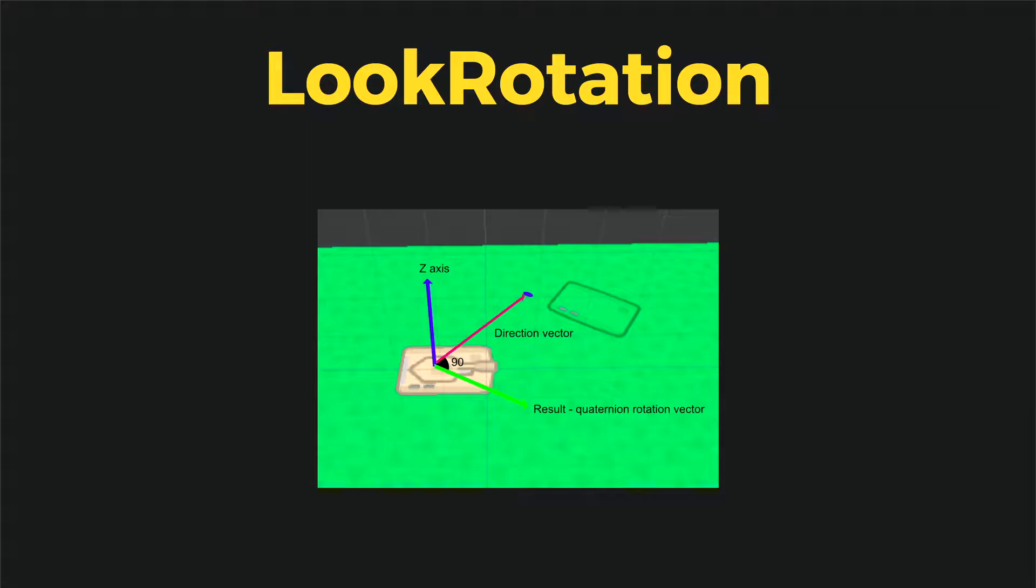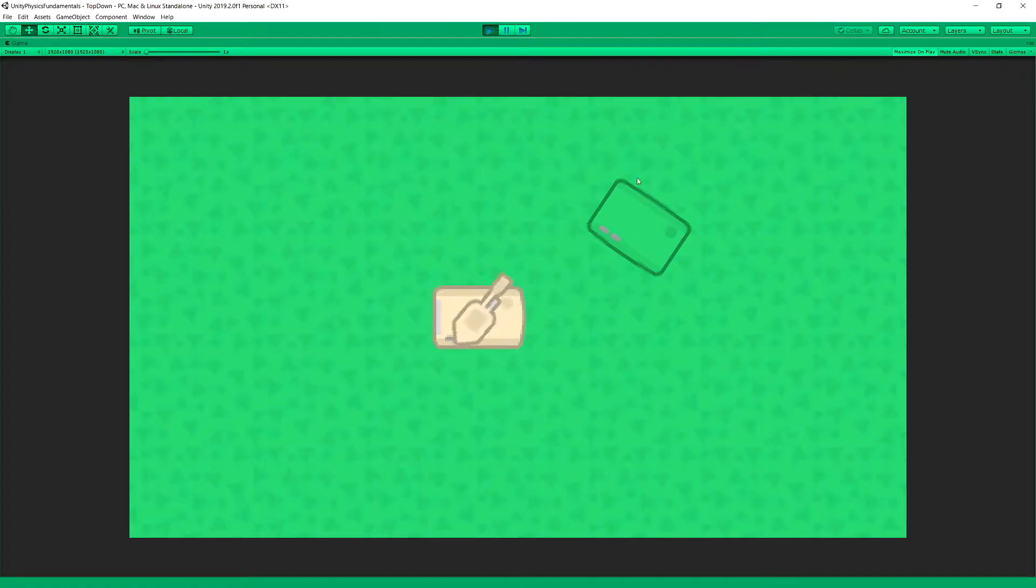So in the end LookRotation will change the direction in which z and x axes of the game object are pointing towards. So the result is that our tank turret is following our mouse without any issues.